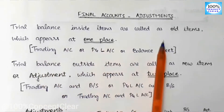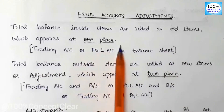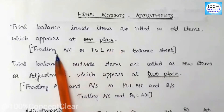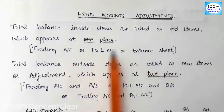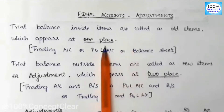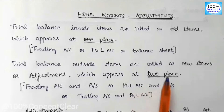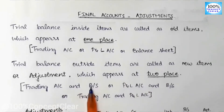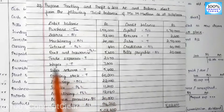The old items from trial balance appear at one place — either a trading account, P&L account, or balance sheet. But the adjustments appear at two places: trading and balance sheet, P&L and balance sheet, or trading and P&L account.